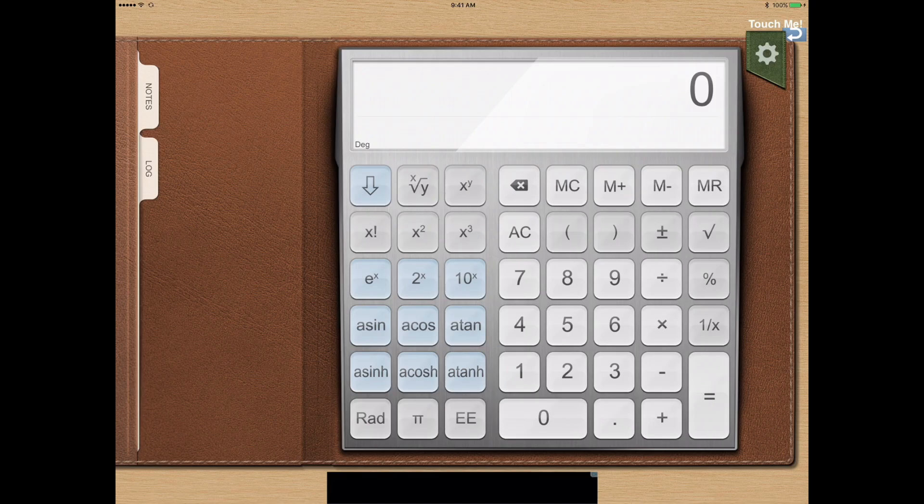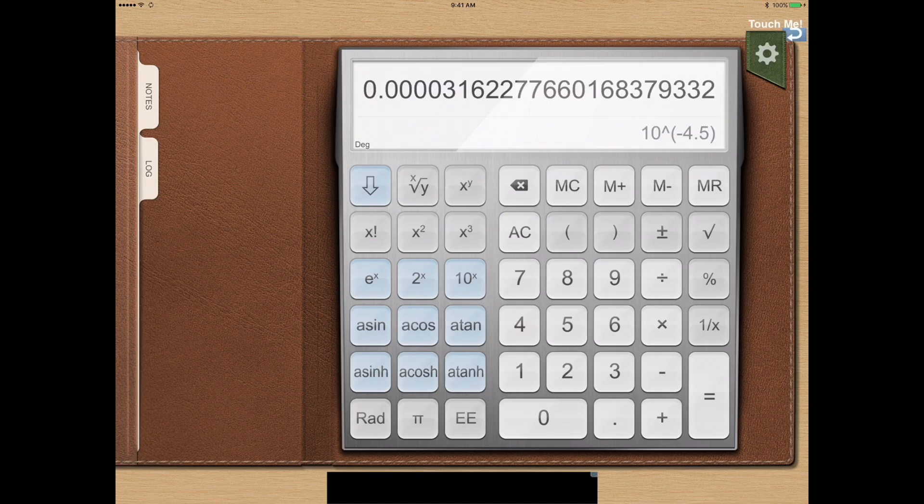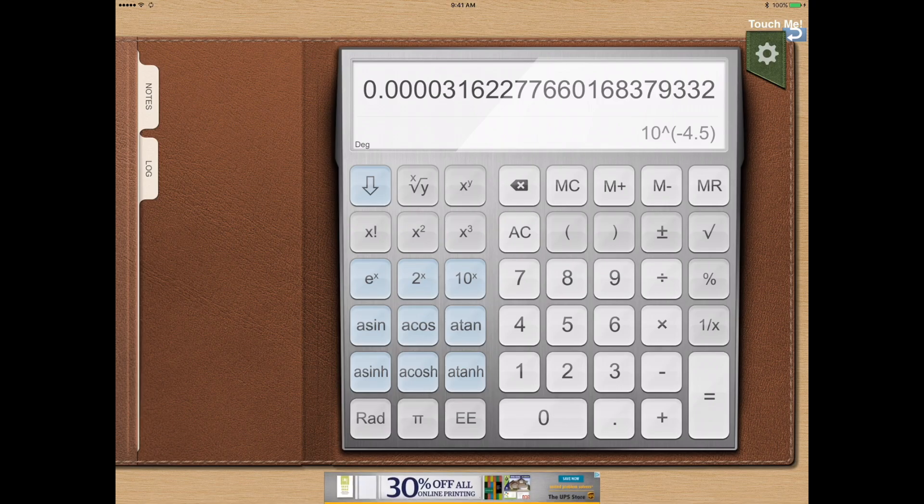Now to do the calculation on this calculator it may not work the same for your calculator. Just like logarithms it's manufacturer specific on how it wants you to enter the data. In this calculator I simply enter 4.5 negative and then hit 10 to the X. And then it gives me this long value with a long string of numbers. But that is my concentration of hydronium in molarity. Now let's put that back on our answer sheet.